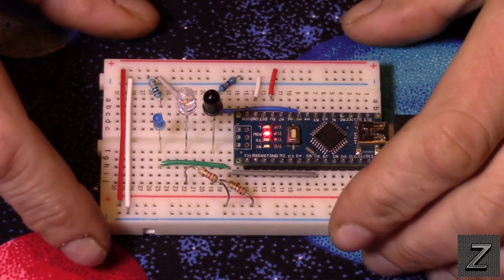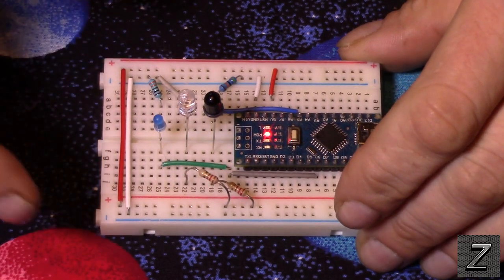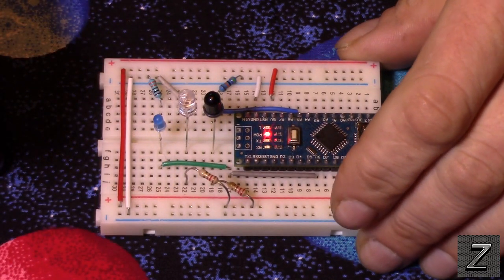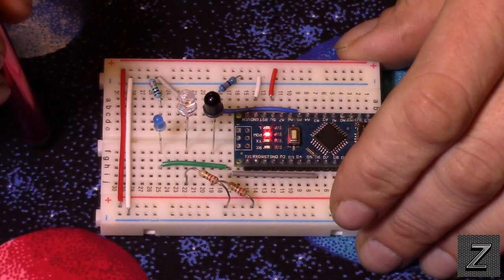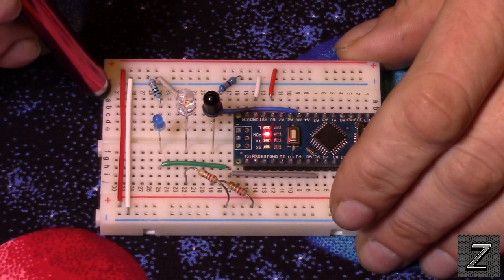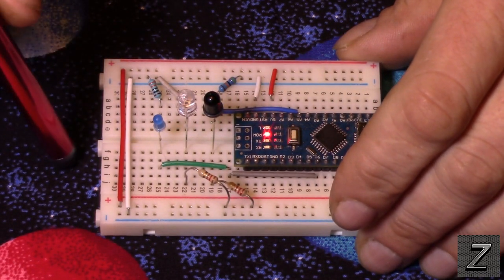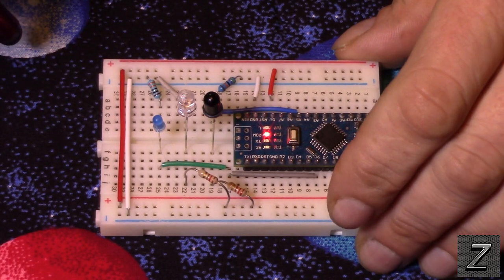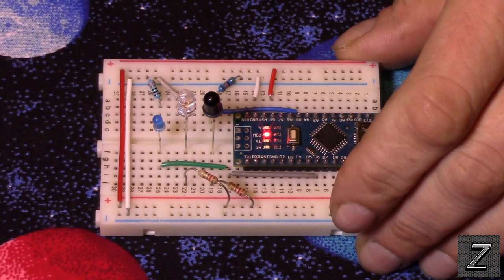But we'll do first, we'll take a look here at the circuit. Then we'll go over and look at the diagram, the schematic for the circuit, and go through it. And then we'll go and take a look at the Arduino sketch for making this work.